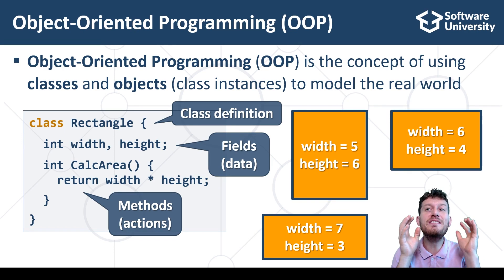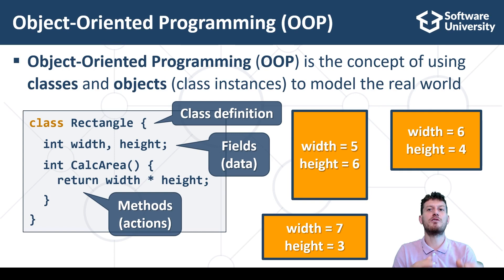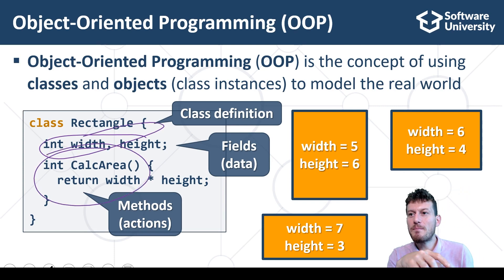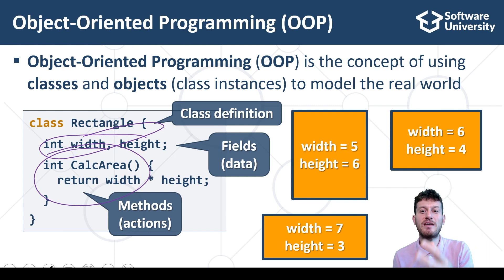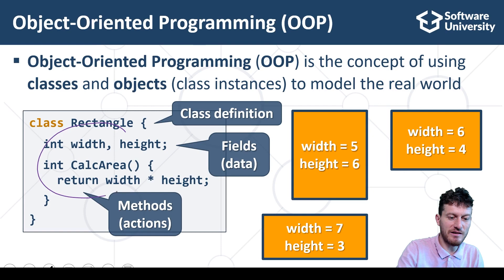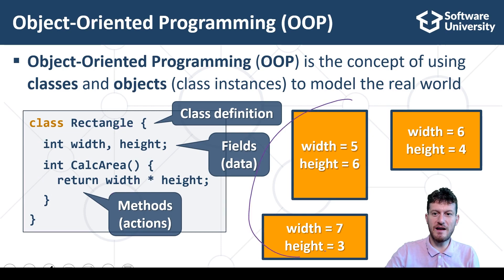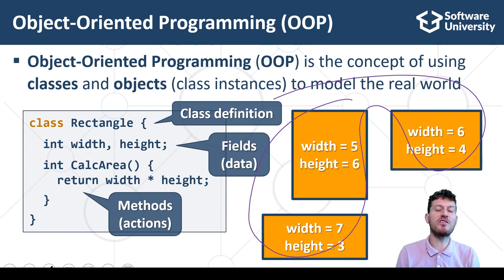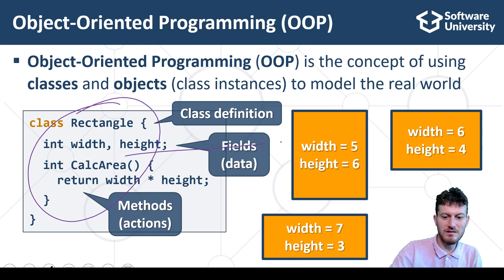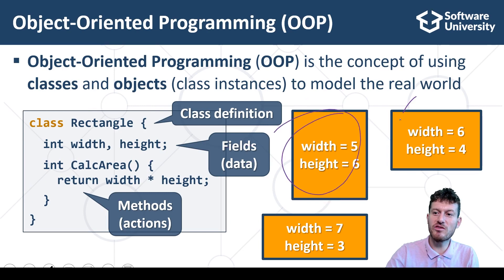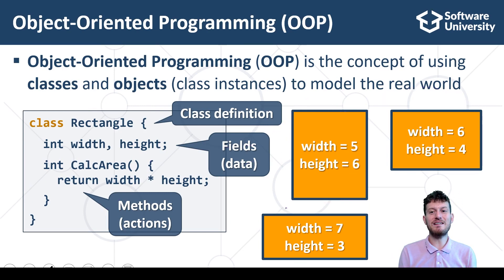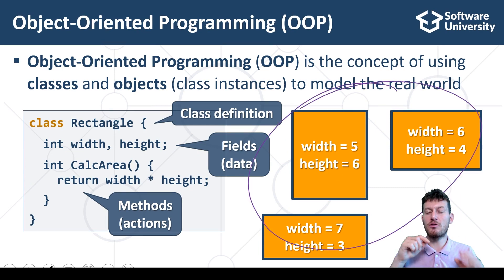The class holds the definition, the specification, the model, the template for the object. It defines the data fields, the methods, and more details in some cases. Classes don't hold data — they hold data definitions and operation definitions. Objects hold values for the data fields in the class. Objects of class Rectangle hold data about certain rectangles. Objects are information structures holding data. Typically, one class has multiple objects or instances.